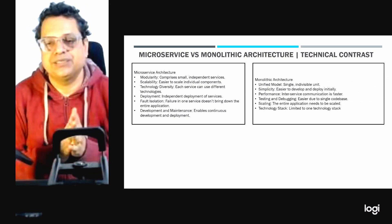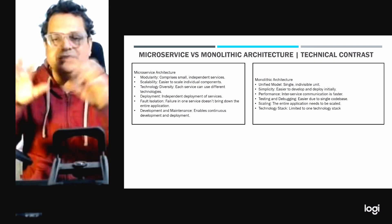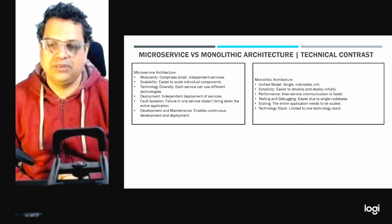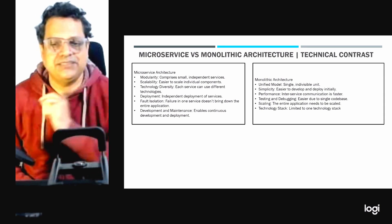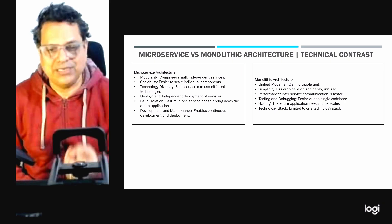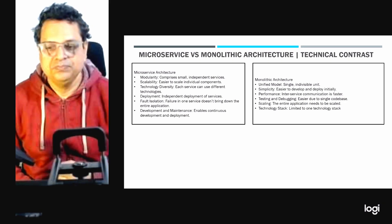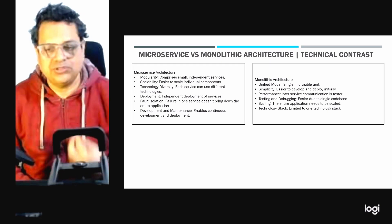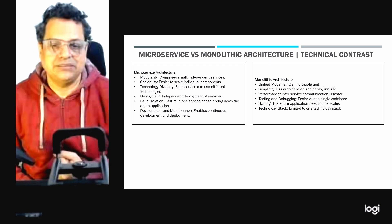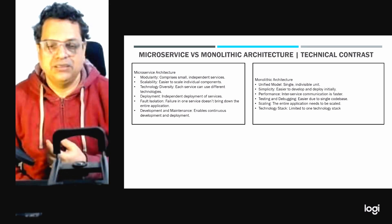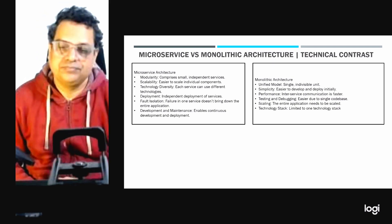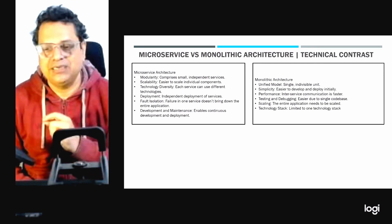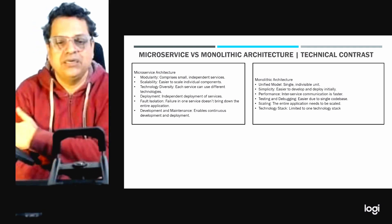Now let's look at monolithic architecture. The first key point is that it is a unified model — all components and functionalities are tightly coupled within a single service. Another key feature is simplicity: it is easier to develop, deploy, and test initially due to a single code base and unified development environment. The third key point is performance — direct method calls within a single process are faster than inter-service communication over the network, giving monolithic a performance advantage over microservices.